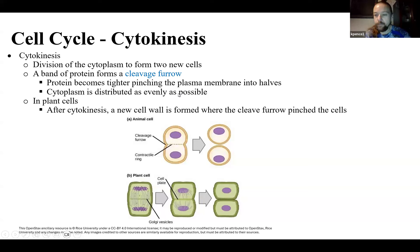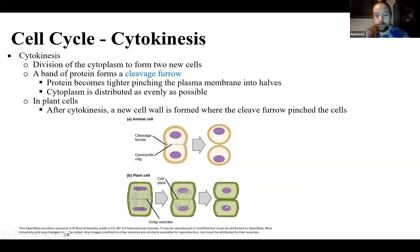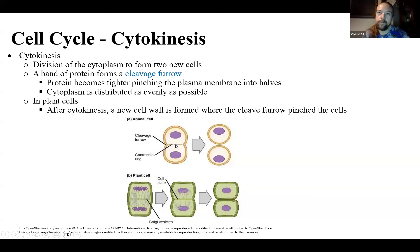That process of splitting is called cytokinesis. Animal cells do it very quickly because we don't have a cell wall. That dashed line in the middle is proteins acting like a rubber band — it gets tighter and tighter around the plasma membrane until it pinches the two cells apart. It also happens in plant cells, but plant cells have a cell wall, so after the plasma membrane splits, it has to grow a new cell plate to make two separate cells.